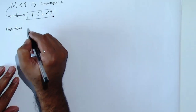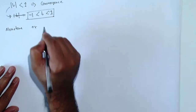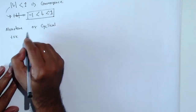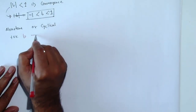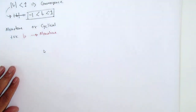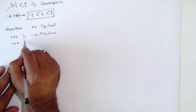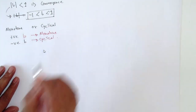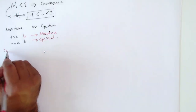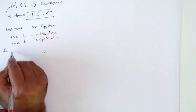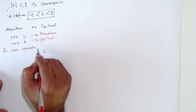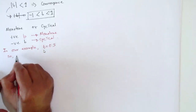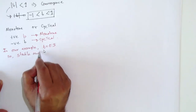Now, how to determine whether the system is monotone or cyclical: if b is positive, you have a monotone system — monotone convergence. If b is negative, you have cyclical or oscillating convergence. So b plays a pivotal role in determining both the convergence and the monotonicity or cyclicity. In our example, b was 0.5, so it is stable, convergent, and also monotone.